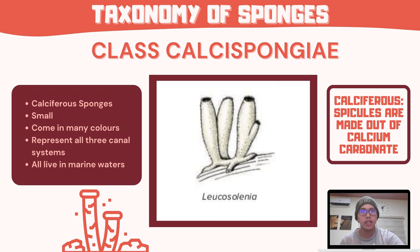Calcispongiae are calcareous sponges, meaning their spicules are made out of calcium carbonate. Their spicules are either straight or have three to four rays. Their spicules often form a fringe around their osculum to discourage small animals from entering. These sponges tend to be small, usually 10 cm or less in height, and are either tubular or vase-shaped. They also come in many colors. In this class, all three types of canal systems are represented. All Calcispongiae live in marine waters. Examples are Leucosolenia and Clathrina.